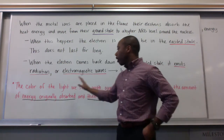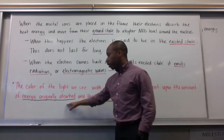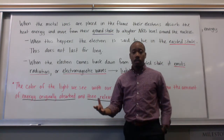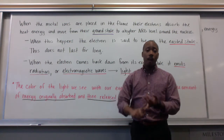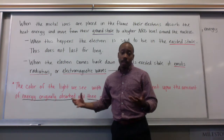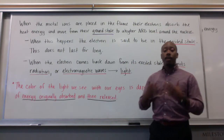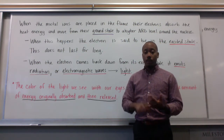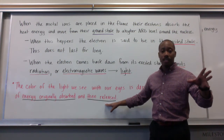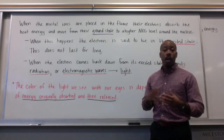The color of the light we see with our eyes is dependent upon the amount of energy originally absorbed and then released. Each substance — whether you have potassium ions, copper ions, or calcium ions — will absorb different amounts of energy, and then release that energy in different amounts from one another. That's why they have different colors. Different energy absorption and emittance will emit different colors of light.